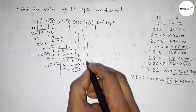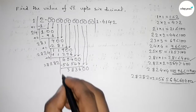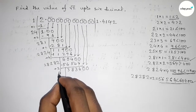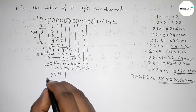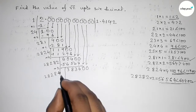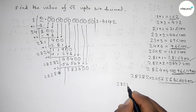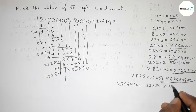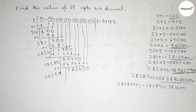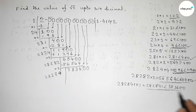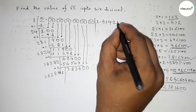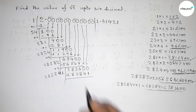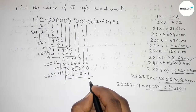Write down the next pair of zeros, bringing 00 to get 383600. Draw a division line. The last digit is 2, so add 2: 28282 plus 2 equals 28284. Put a number beside 28284. Trying 1: 282841 times 1 equals 282841, which is almost near and less than 383600. So we take 1. Write 282841. Subtracting: 383600 minus 282841 gives the remainder.